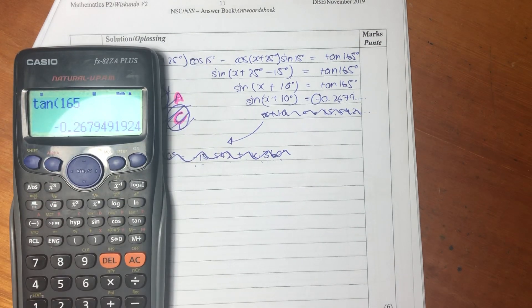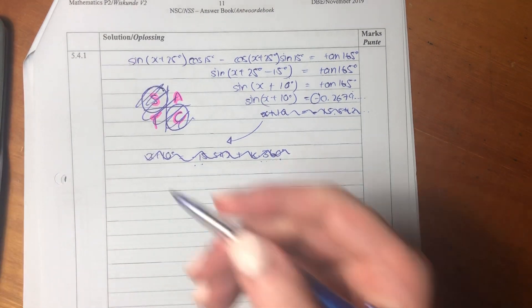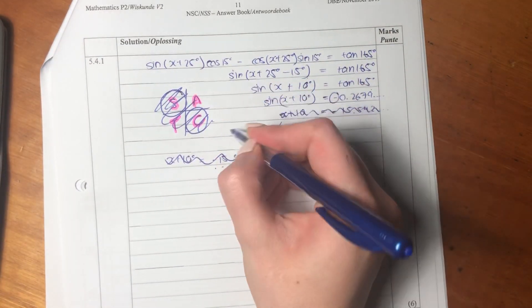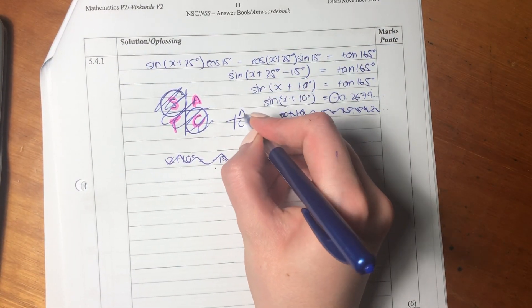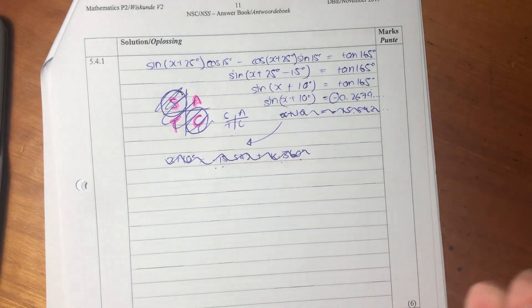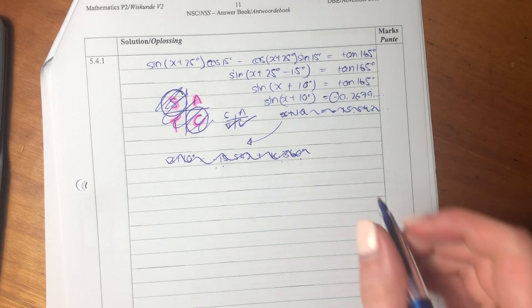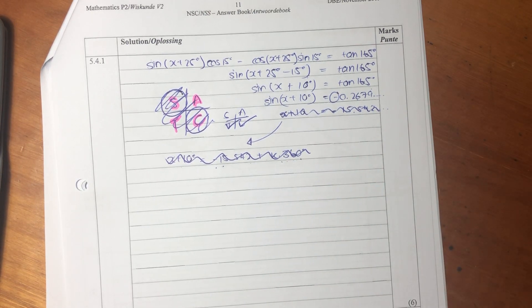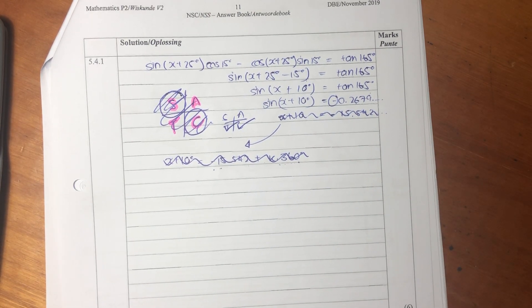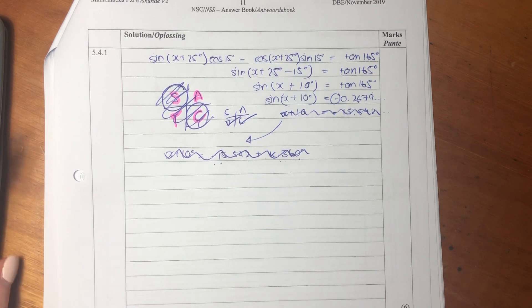So basically what we know is sine is going to be negative. Now, I've crossed this out here, but we actually do need this. So you have this CAST system. Where is sine negative? In these two quadrants. So now what we need to do is we need to get our reference angle. Remember, our reference angle is not negative. It's just an acute angle.